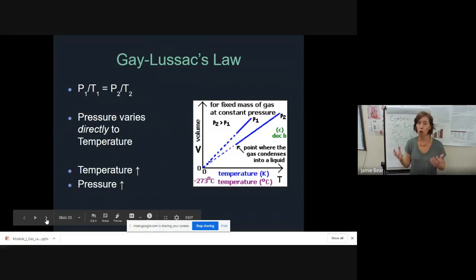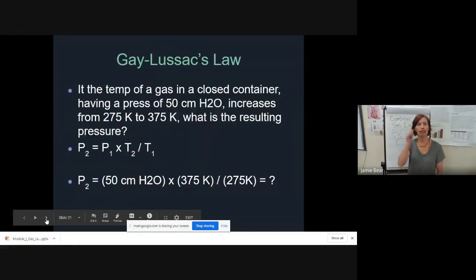Another example: we have the temperature of a gas in a closed container having a P1 of 50 centimeters of water pressure, increased from 275 to 375. What is the resulting pressure? We're going P1 times T2, so 50 times 375 divided by T1, which is 275. The answer is 68 centimeters of water pressure. Does this make sense? We go from 275 to 375 Kelvin, so the temperature cranks up. So does our pressure from 50 to 68 centimeters of water pressure. So that does make sense.